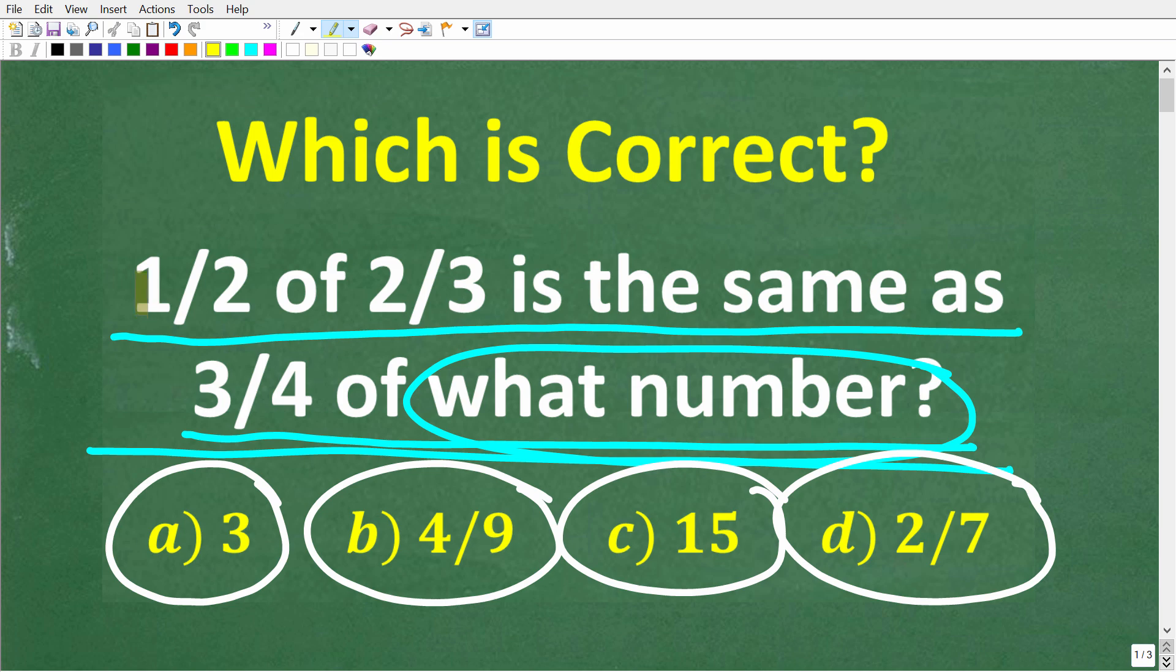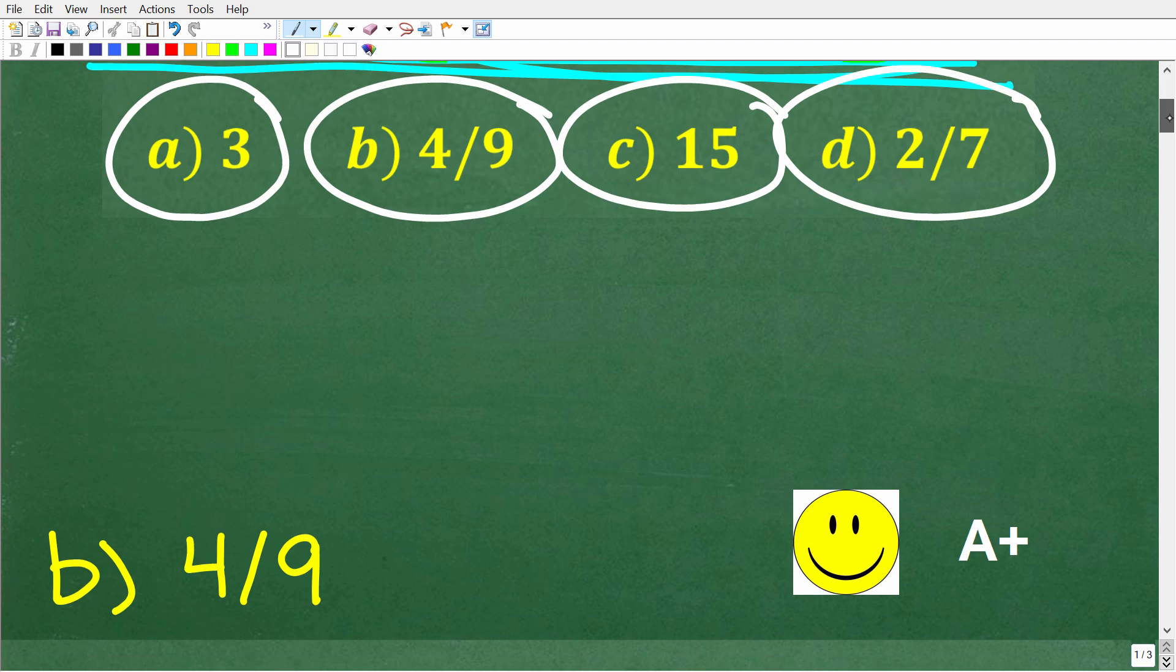All right, so one more time, one half of two thirds is the same as three fourths of what number? We're looking for this number. The correct answer here is B, which of course is four ninths. Now if you got this right, well you definitely get a happy face and A plus.